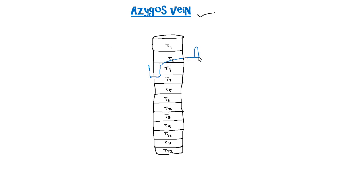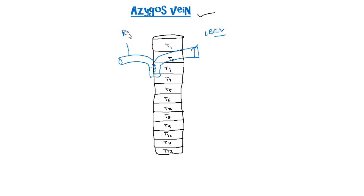This is the superior vena cava, and the right and left brachiocephalic veins. This is the left brachiocephalic vein and the right brachiocephalic vein. Below we have the inferior vena cava.